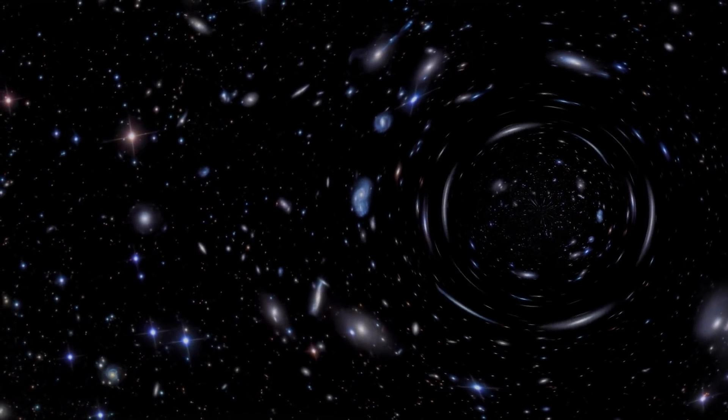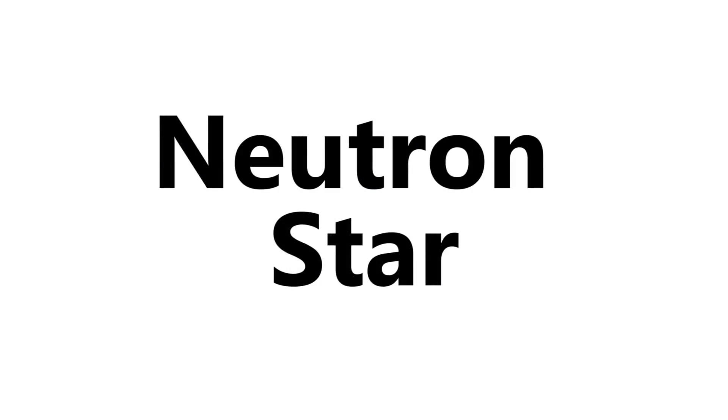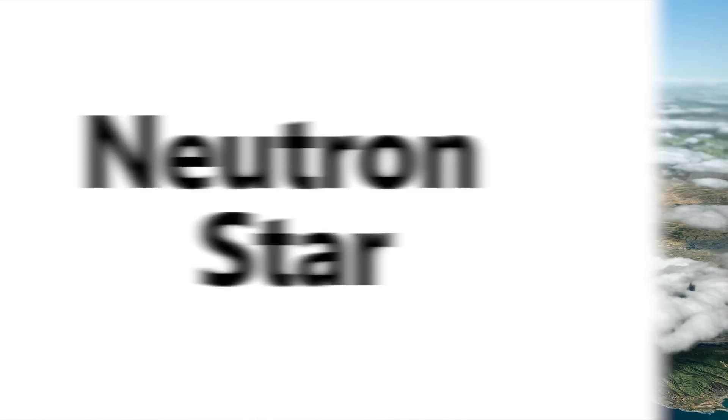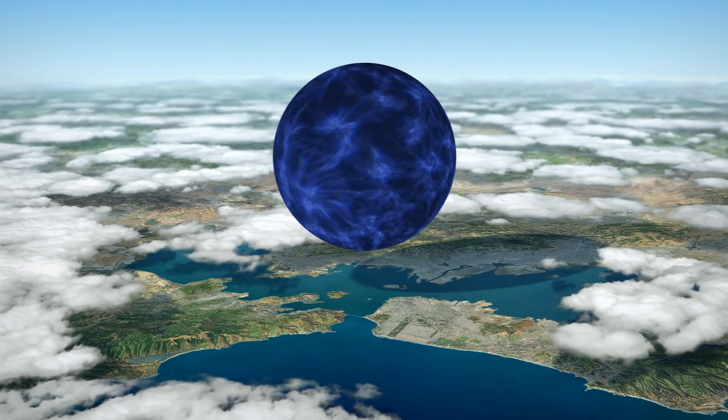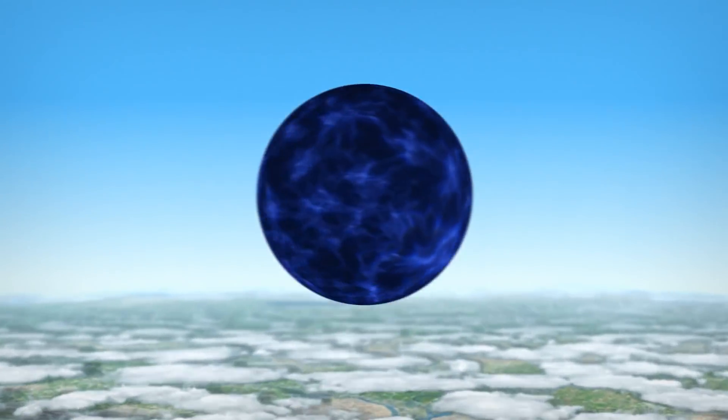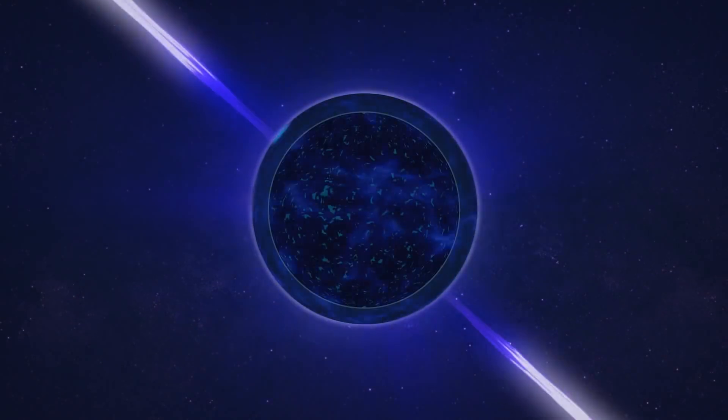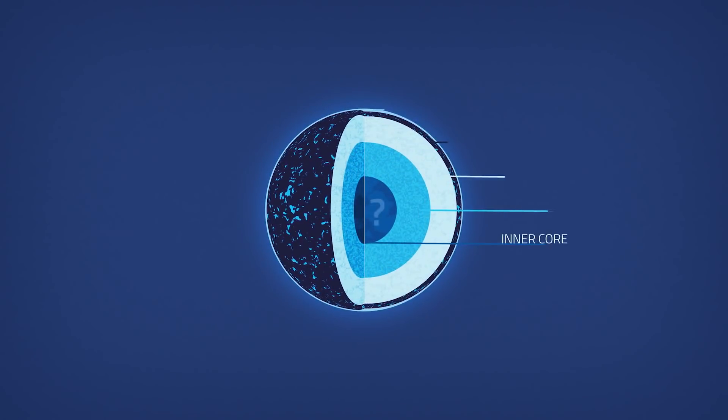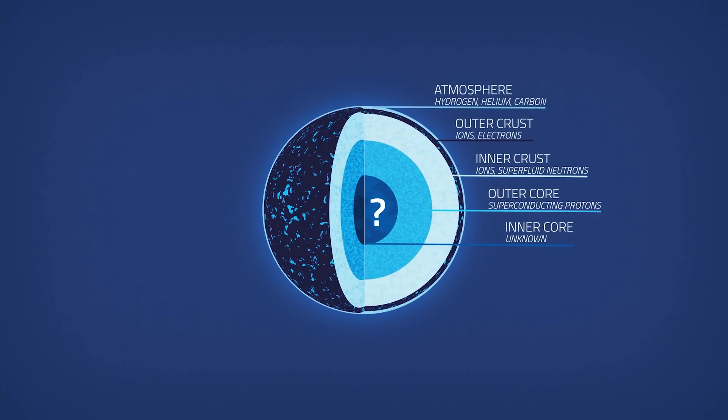One of the densest objects in the universe is the neutron star. Imagine something that has three times the mass of our sun compacted into a sphere that's around 22 kilometers across. It is made mostly of neutrons. You know, an atom is made of protons, neutrons, electrons,